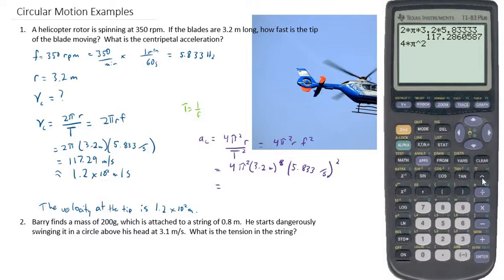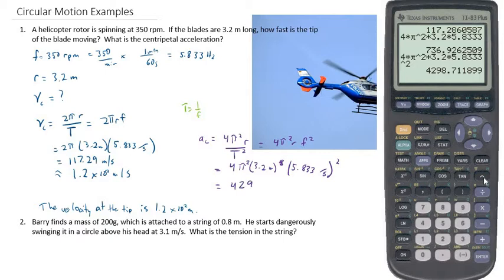So let's punch that one out on our calculator. So 4 times pi squared times 3.2 times 5.8333. Nope, I'm not sorry, that one has got to be squared. So this has to be this last number squared. So 4,298.7, 4,299 meters per second squared is our acceleration.